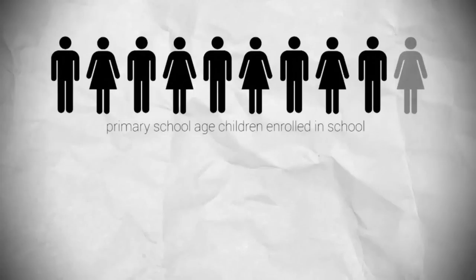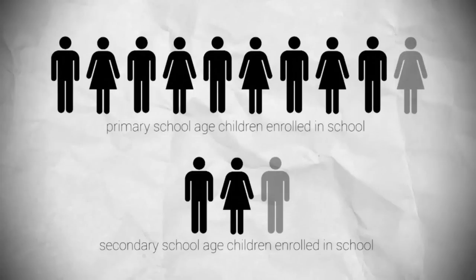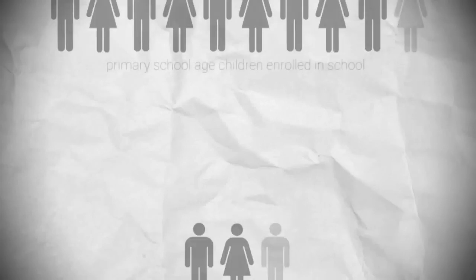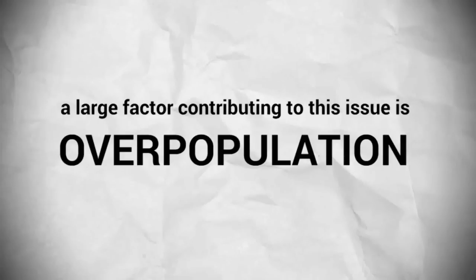One in ten primary school-age children and one in three secondary-age children are not enrolled in school. A large factor contributing to this issue is overpopulation.